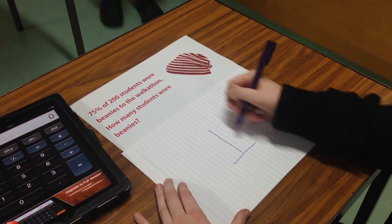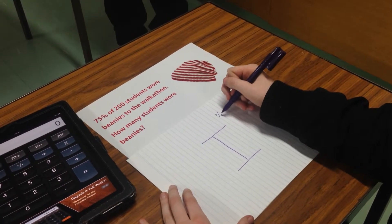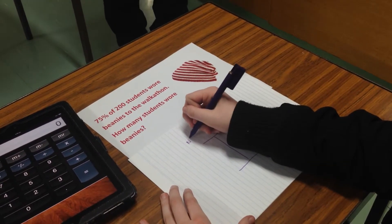We need to use the dual number line for this. You put the percentage on this side and the number of students on this side.